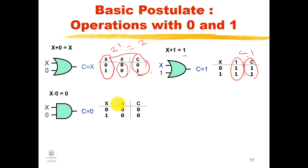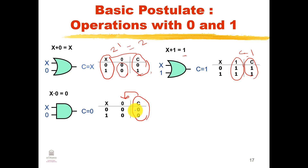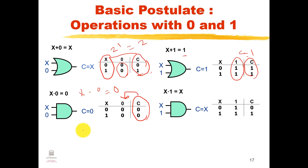Another postulate is the idempotent law: if I OR a variable with itself it gives that variable. Truth table proof — zero OR zero equals zero, one OR one equals one — so C equals X, therefore X OR X = X. Similarly for AND: zero AND zero equals zero, one AND one equals one, so C equals X, meaning X AND X = X.